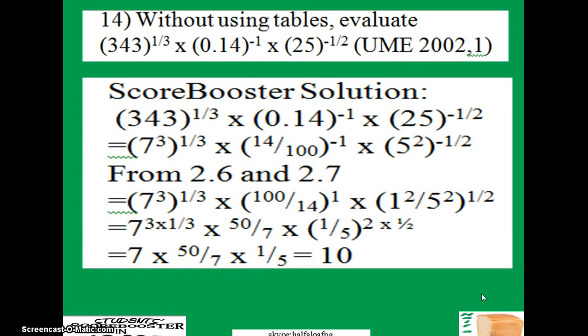So we go to another question which is: without using tables, evaluate 343 raised to power one-third times 0.014 raised to power minus 1 times 25 raised to power minus one-half. This is a UME question. So you have 343 times 10 raised to power 3. I'm just repeating the question here, I have not done anything.